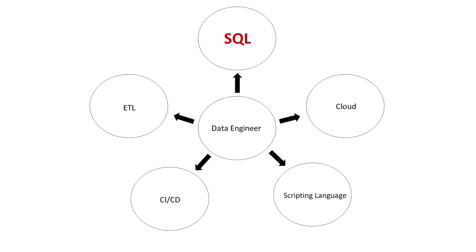Let's take a minute to look at them in graphical form. In the middle we have the data engineer role, and the spokes in the wheel are the core skills all companies are going to be asking for. First up is SQL. Second is cloud skills — I'd focus on one cloud for now, either AWS or Azure. Third is a scripting language — I'd highly recommend Python. Next is a complete understanding of the CI/CD pipeline. All of the jobs listed knowledge of one or more relational database systems. And lastly, a complete understanding of ETL.